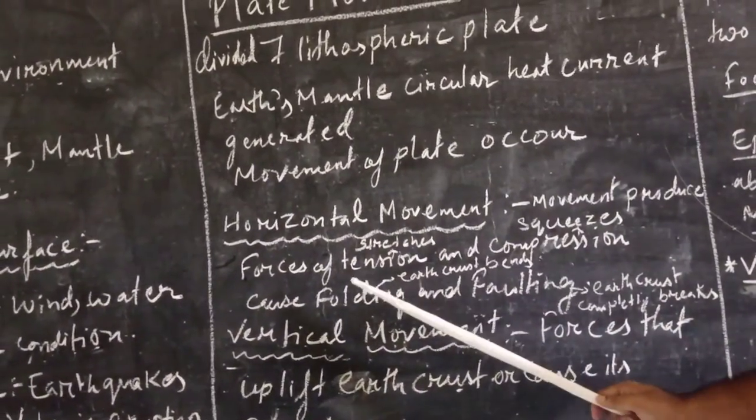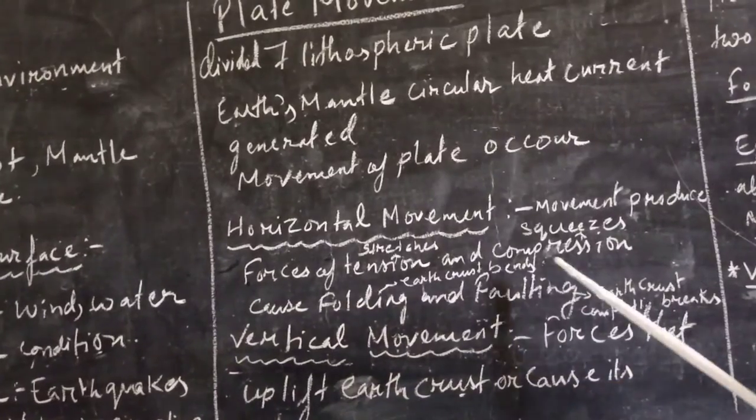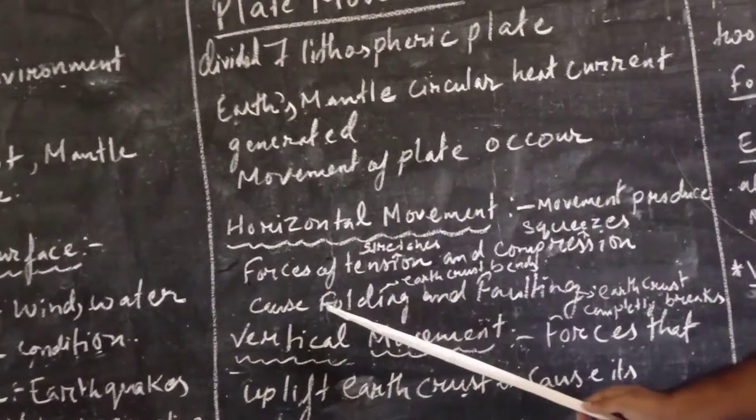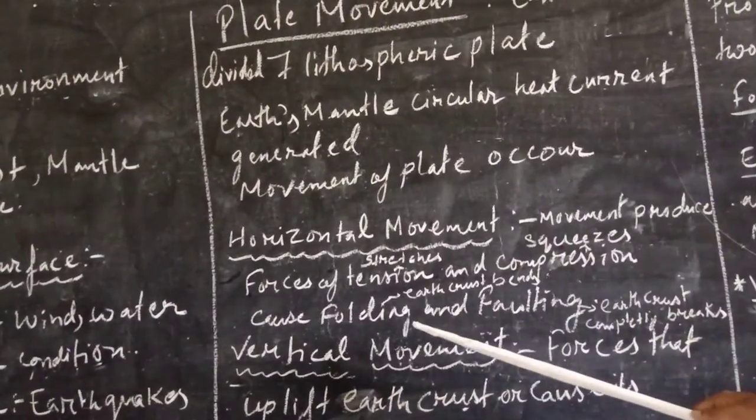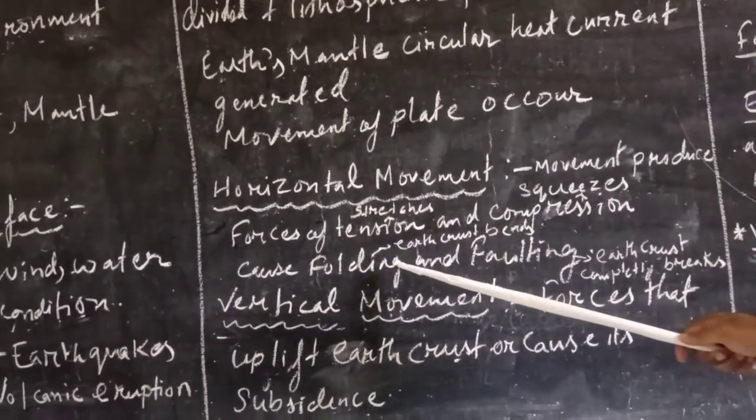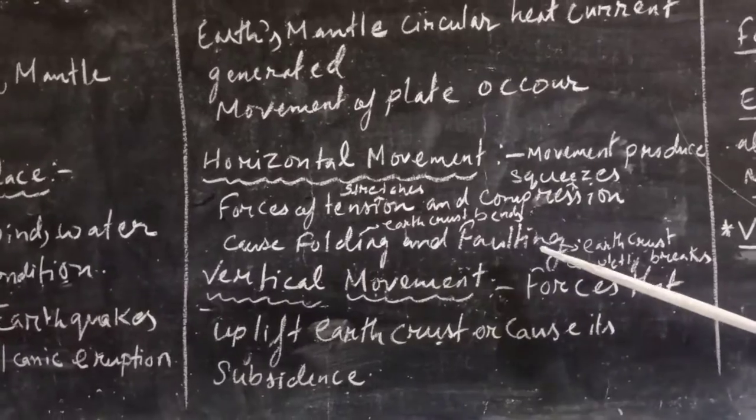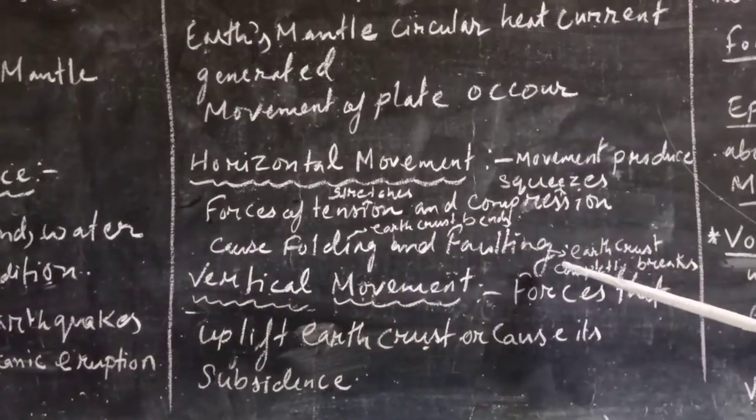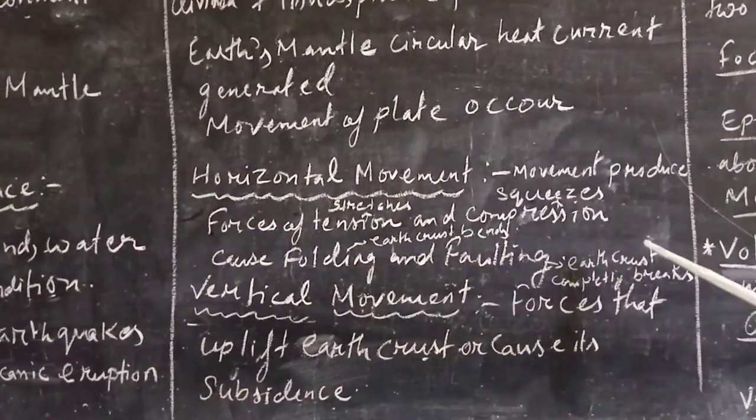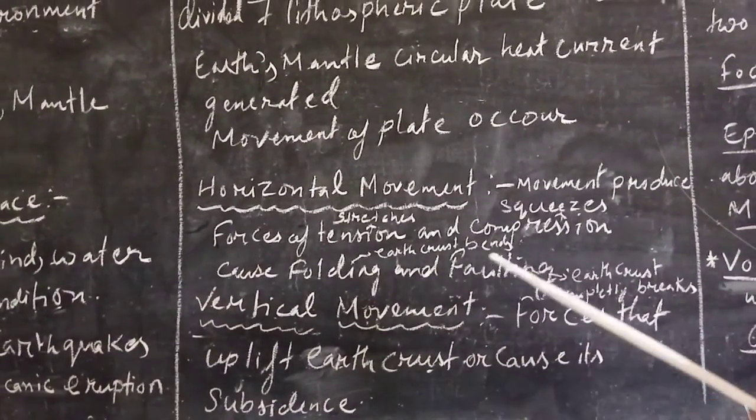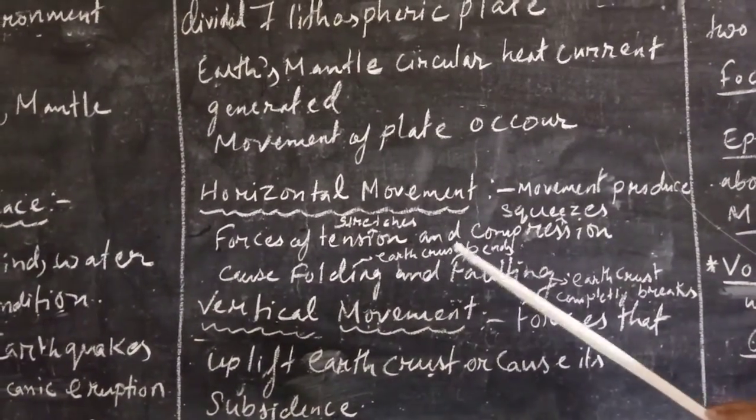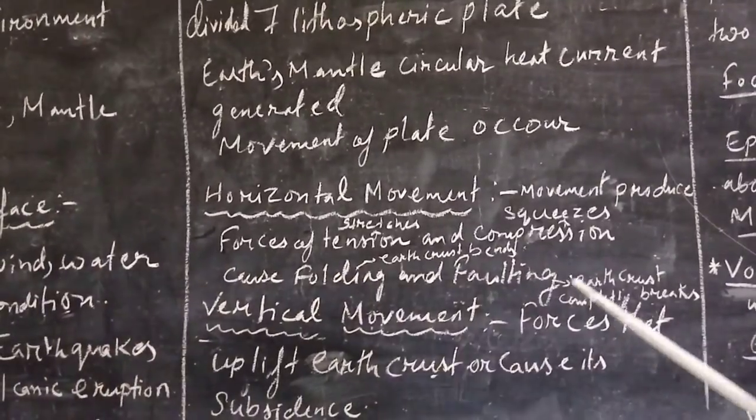When it produces force of tension and compression on Earth's surface, it causes folding and faulting. What is folding? Earth's crust bends. Folding means bending. And faulting means breaking. Earth's crust completely breaks. When it breaks, it is called faulting. So that is folding and faulting, and it is caused by horizontal movement of tension and compression.